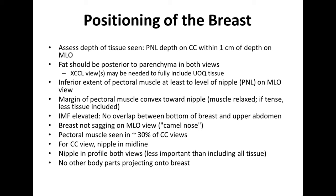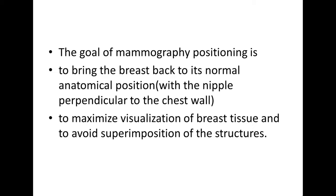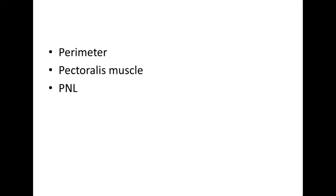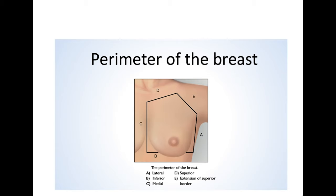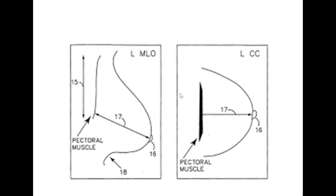The next factor is positioning of the breast. To understand breast positioning, we need to understand the concept of the perimeter of the breast, the pectoralis muscle, and the posterior nipple line. The goal of mammography positioning is to bring the breast back to its normal anatomical position, to maximize visualization of breast tissue, and to avoid superimposition of structures. In the perimeter, we define the medial, lateral, superior, and inferior sides of the breast.